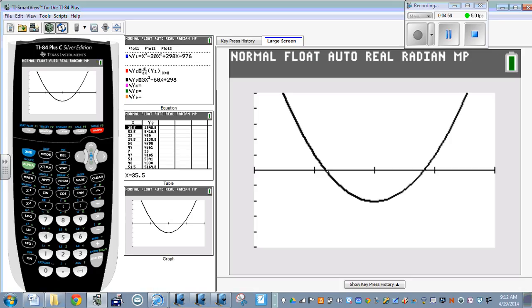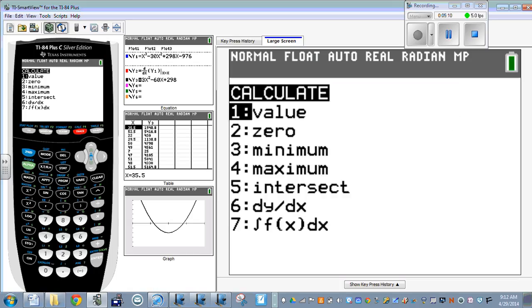And let's calculate this 0. So we're going to do 2nd, trace. Or not, just try that again. 2nd, trace. And we want to calculate the 0, so option number 2.